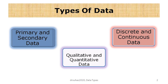Based on the method of collection, when you are collecting data for the first time — original collection by the researcher for their own purpose — it is called primary data. When somebody else has already collected it and you are using it from reliable sources, it is called secondary data. We will discuss each classification in detail and examine the utility of each.